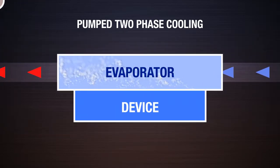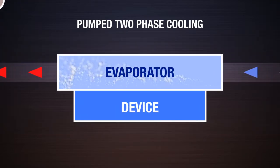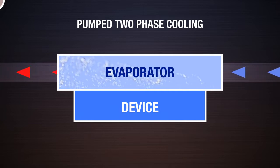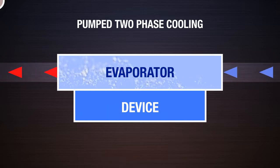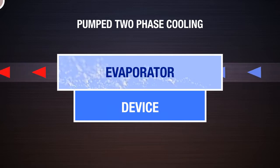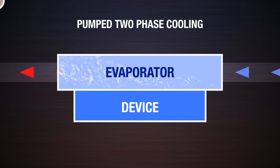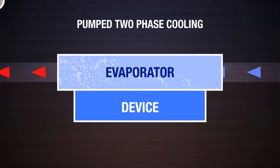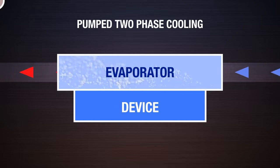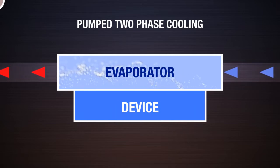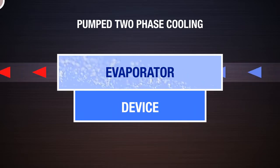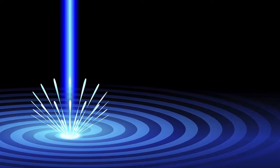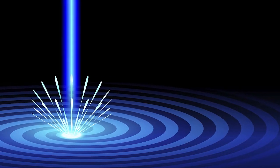Boiling across the entire evaporator surface offers a further advantage in that the evaporator will have a very uniform surface temperature, typically within a few degrees. This near-isothermal performance is important for many applications, such as laser devices, which have wavelength emission sensitivity.